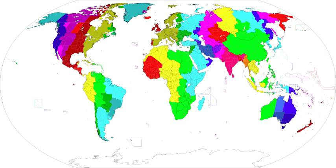UTC+1:30 is an identifier for a time offset from UTC of plus 1 hour 30 minutes. It is no longer in use. It was used by the then governments of the Orange Free State, Transvaal, and the Cape Colony from 1892 to 1903 in what is now South Africa. This time was also used briefly by the former German South West Africa, present-day Namibia.